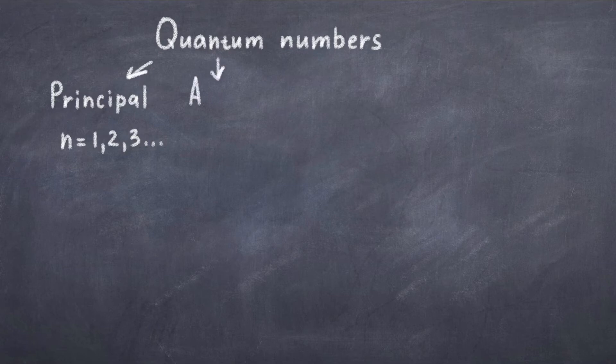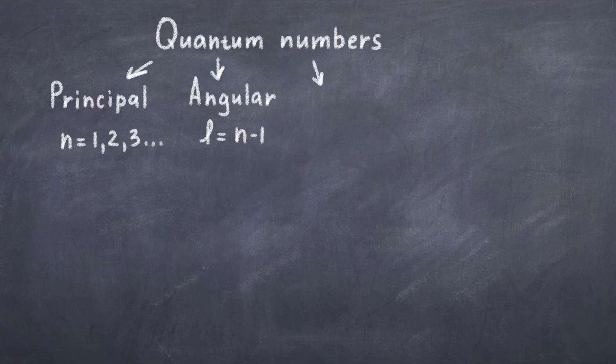We have been introduced to the angular quantum number l already, and it can take the values of 0 up to n minus 1, thus if n is 3, then l can be 0, 1 or 2. This number can be understood as the subshells of the atom, like the s, p and d orbitals. The Bohr model doesn't distinguish between subshells, but they are important for chemistry.